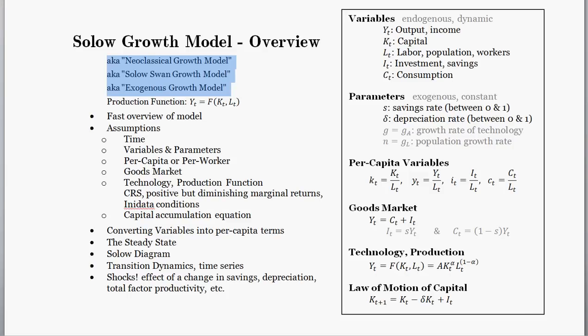The Solow model, also known as the neoclassical growth model, the Solow-Swan model, or the exogenous growth model, is a model to help us understand why economies might grow. The Solow model is usually the second model of economic growth taught to students. It comes right after your professor points out that a macro economy can grow if you increase the factors in the production function — if you increase capital and labor, that increases overall output and the economy has grown.